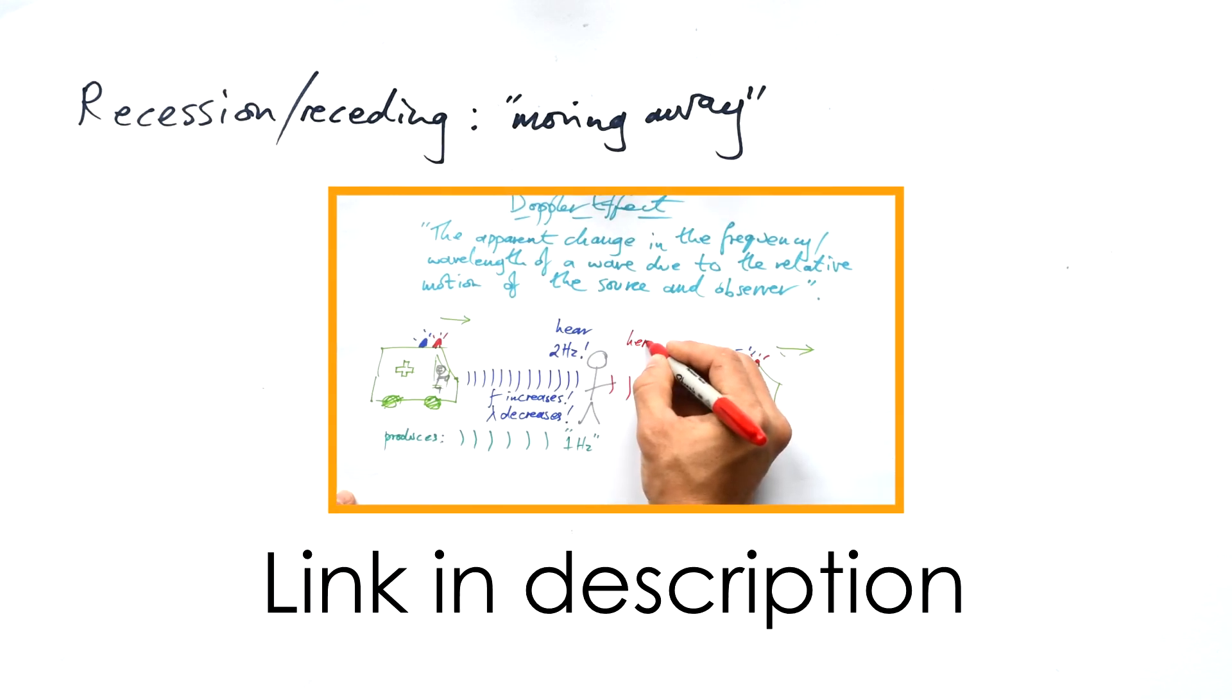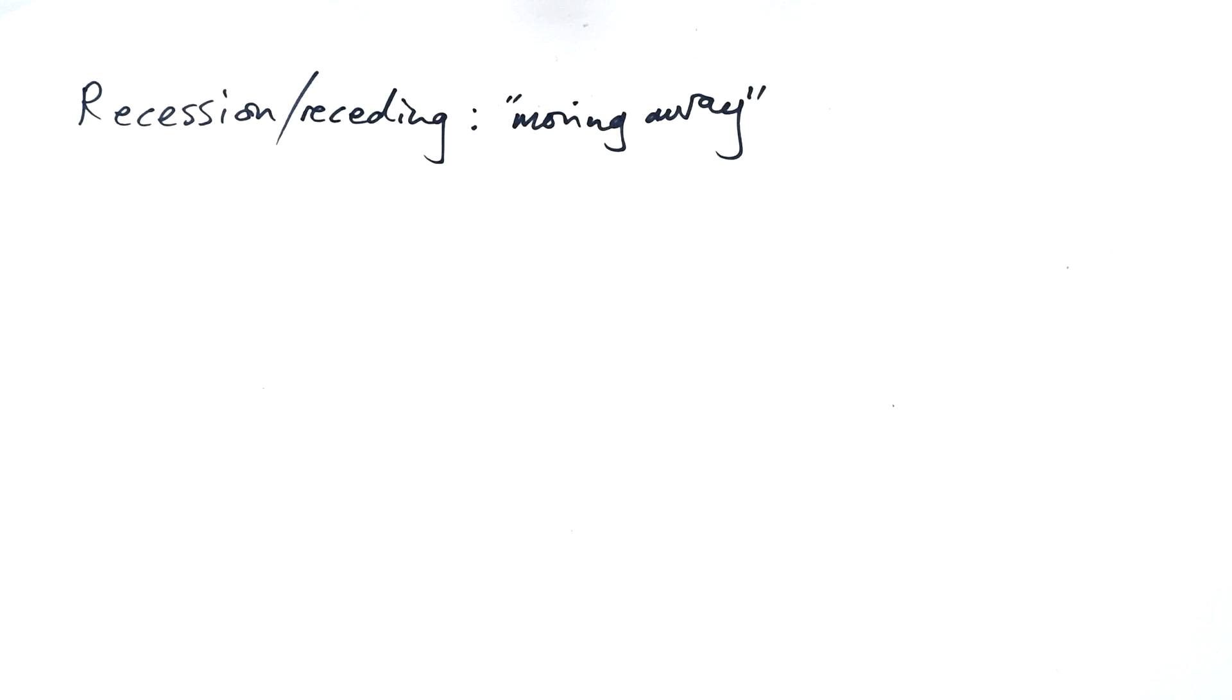Okay, this is the second of two videos, the first one being an introduction to the Doppler effect and redshift, and this part is just for A-level, where we're going to be looking at how we can calculate recessional velocity, that is how fast galaxies are moving away from us, and something called the Hubble constant as well.